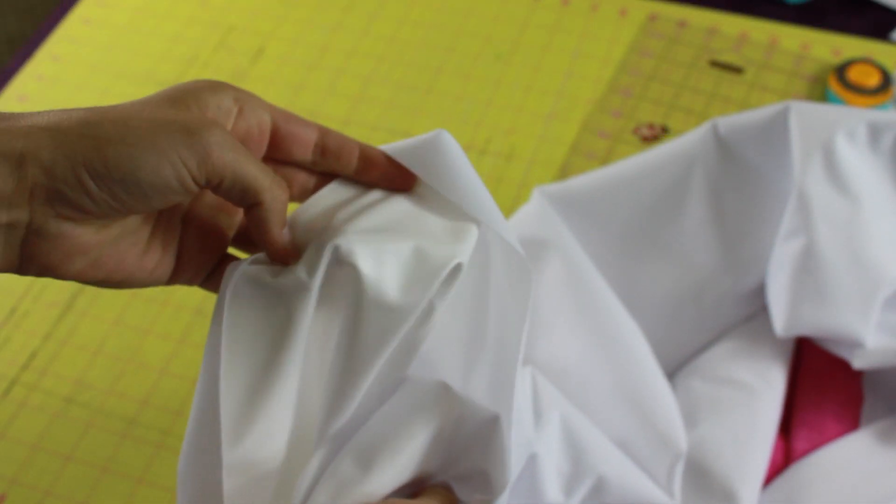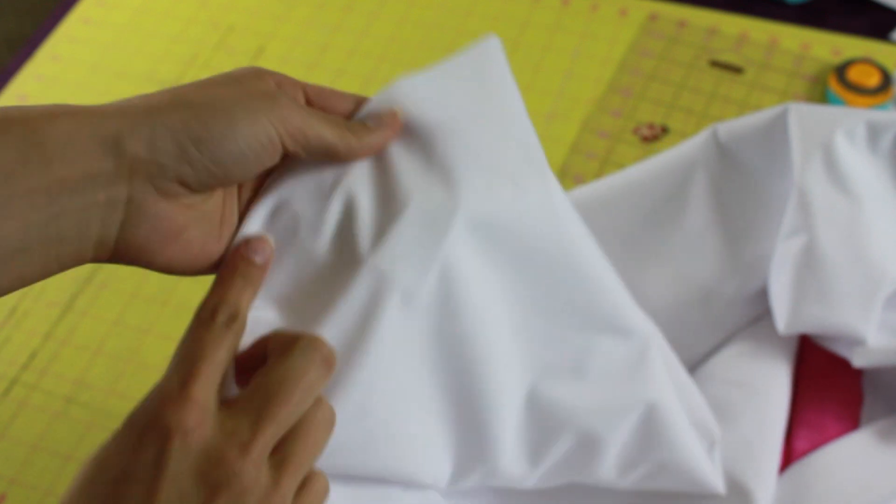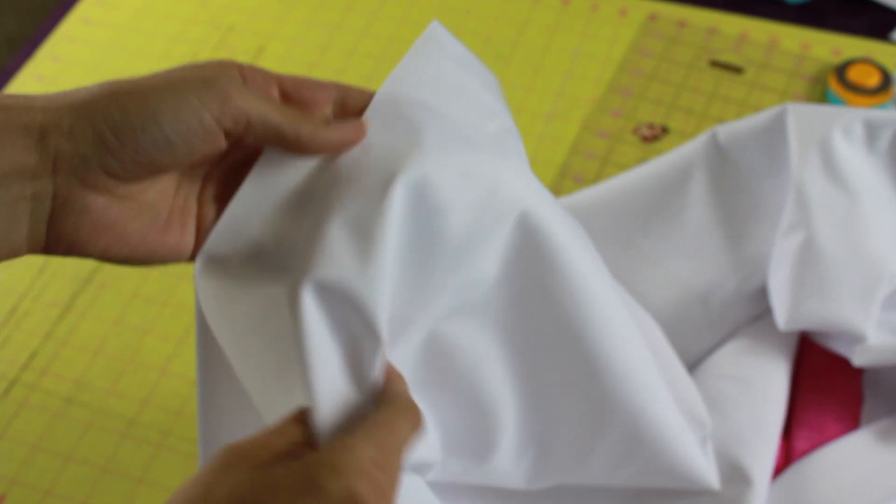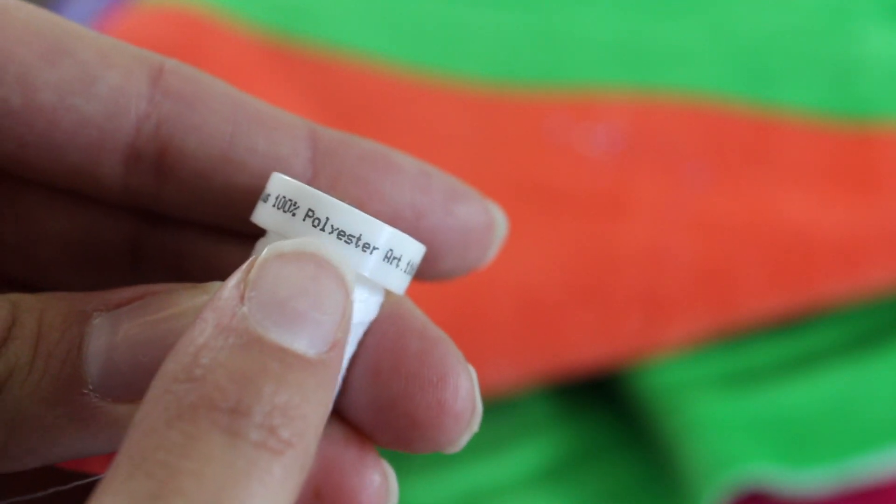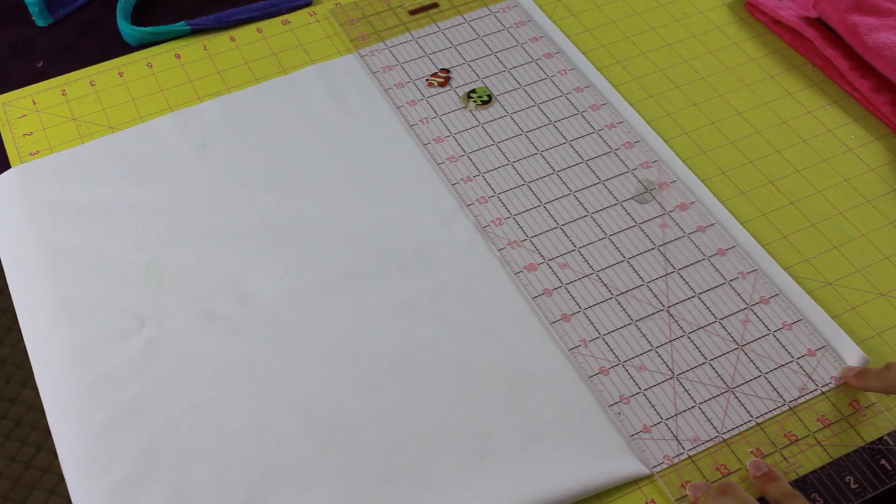This is the PUL fabric that I got at Joann's Fabrics. I used a 40% off coupon so it made it very affordable. You can see the one side is kind of shiny. The next side is kind of a soft brushed fabric. You need 100% polyester thread.